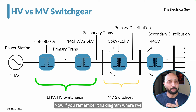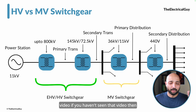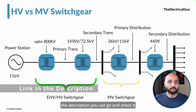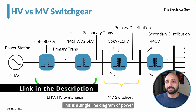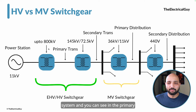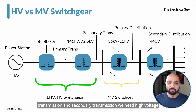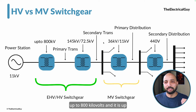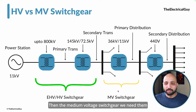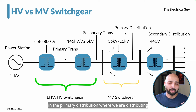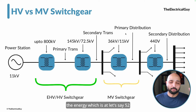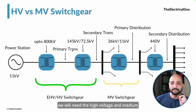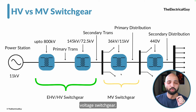In this single line diagram of the power system, you can see that in the primary transmission and secondary transmission we need high voltage and extra high voltage switchgear, which can go up to 800 kilovolts down to 72.5 kilovolts or 52 kilovolts. Then medium voltage switchgear is needed in primary distribution, covering roughly 52 kilovolts down to 1000 volts.